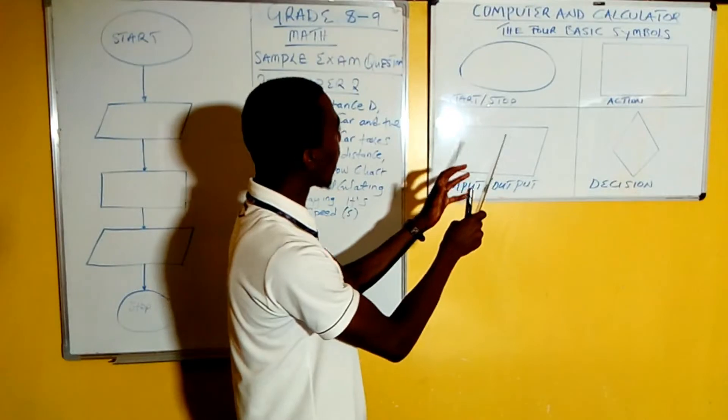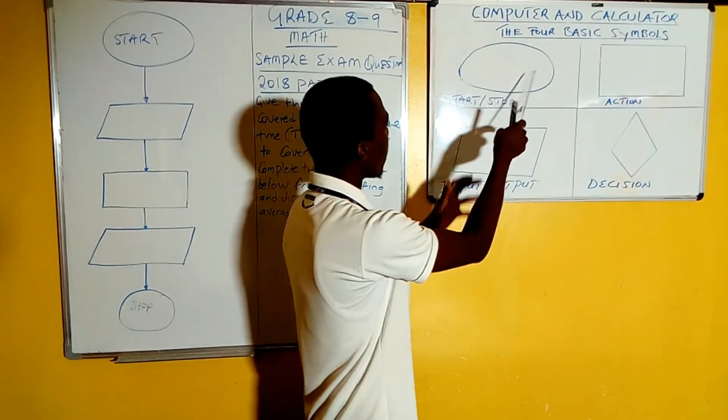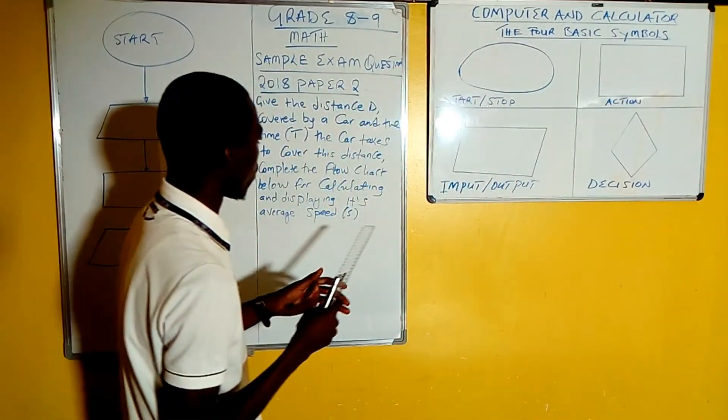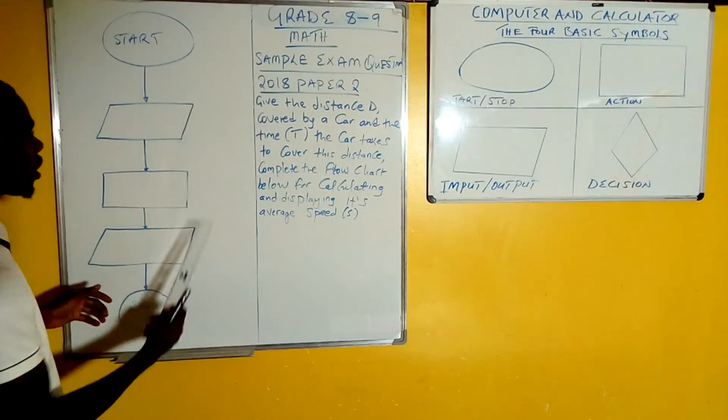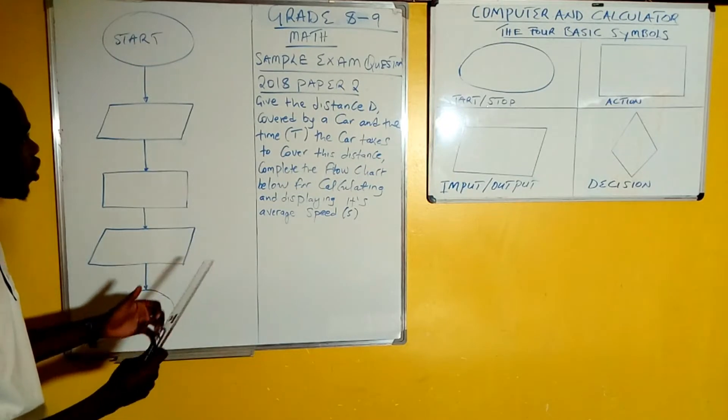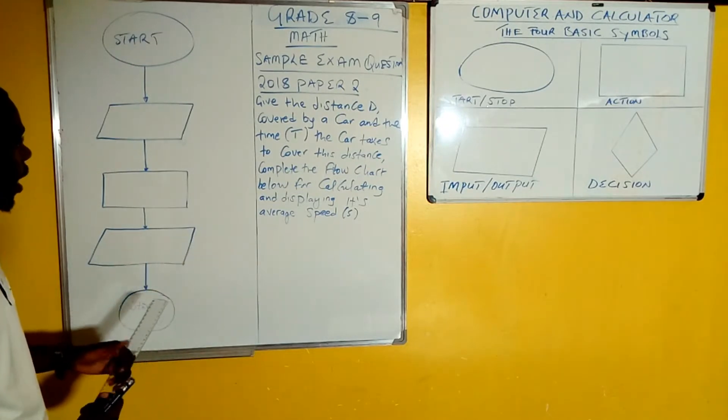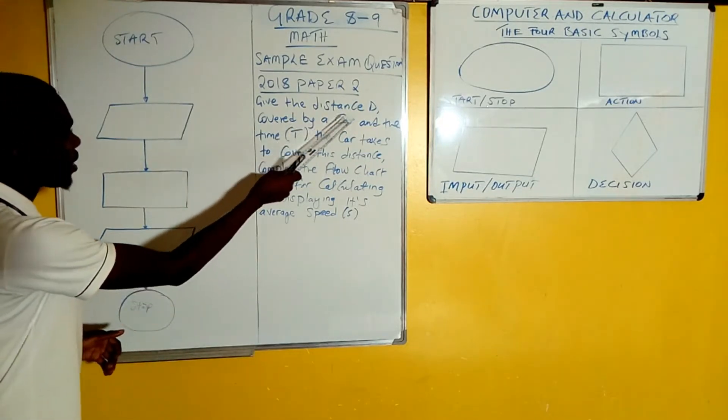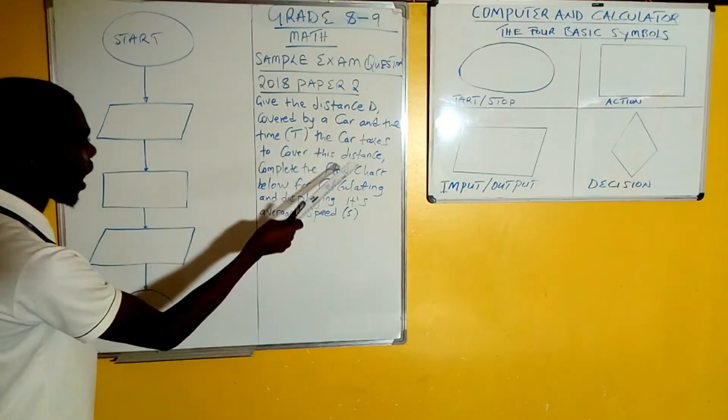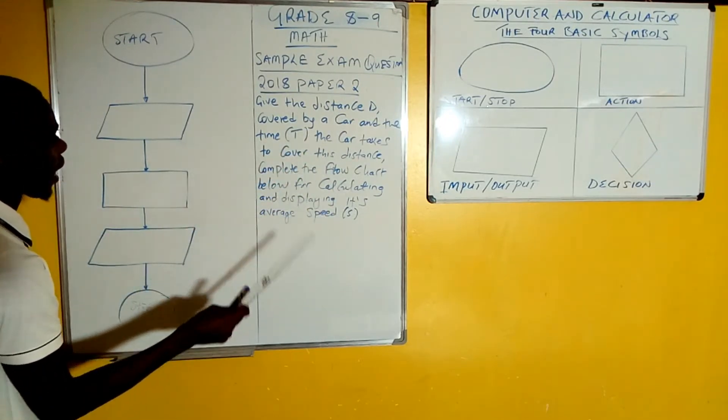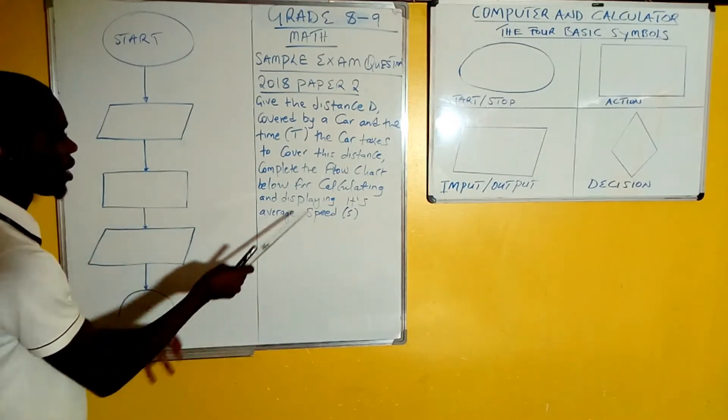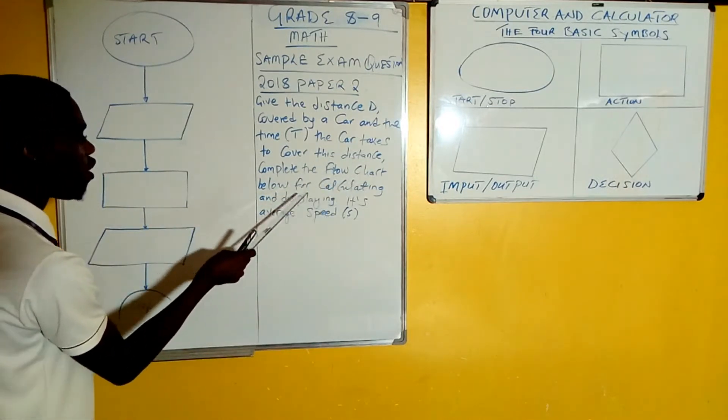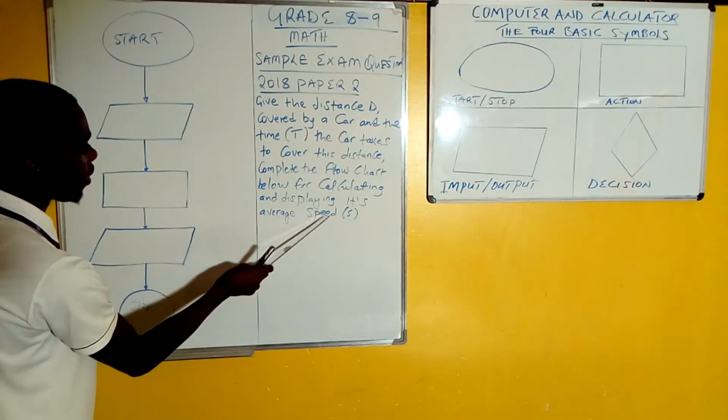Let's now look at a practical scenario where we can apply this knowledge about these four shapes. We switch to this other board here. The sample question has been extracted from 2018 Paper 2 for grade 9. It says: given the distance d covered by a car and the time t the car takes to cover this distance, complete the flowchart below for calculating and displaying its average speed.